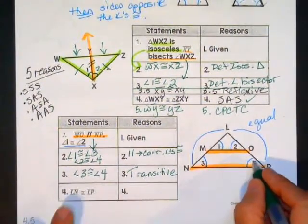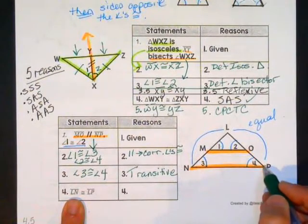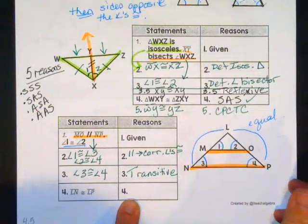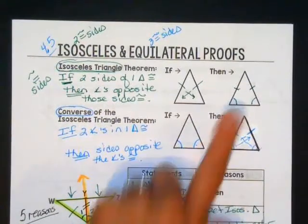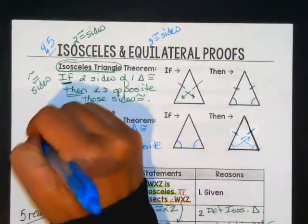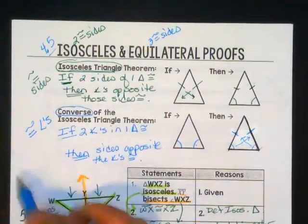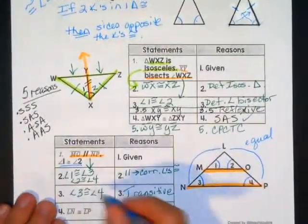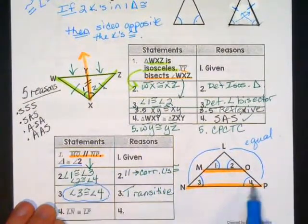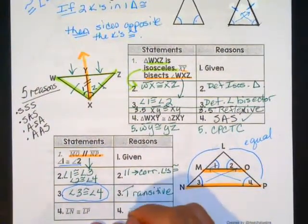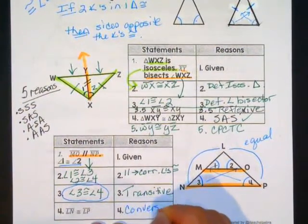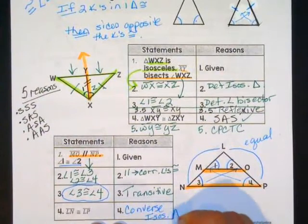If angles 3 and 4 are congruent to each other, that's enough to say these two sides must be congruent. Is that the isosceles triangle theorem or the converse? If you know the sides, then use the isosceles triangle theorem to get the angles congruent. The converse is when you have congruent angles and you're trying to say the sides must be congruent. Down here I have congruent angles 3 and 4, so therefore the sides across from them must be congruent — that's the converse of the isosceles triangle theorem.